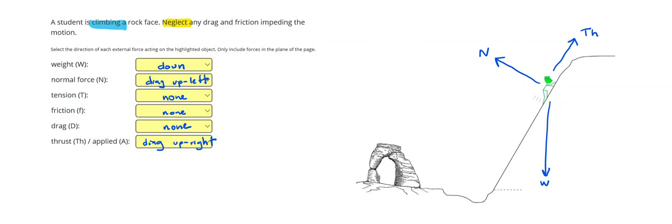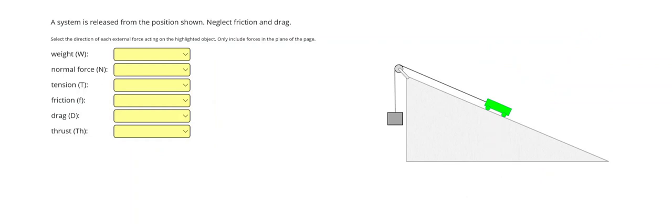All right. In our next example, a system is released from the position shown, neglect friction and drag. And remember, we're focusing on the green object. Perfect. So our weight is going to be straight down. It will be really important later that you get used to drawing the weight straight down.